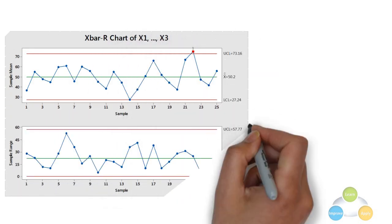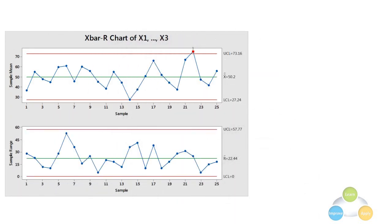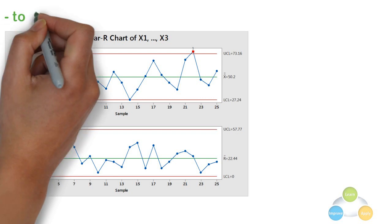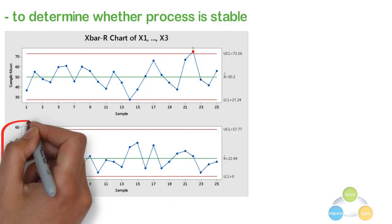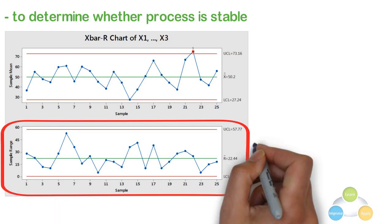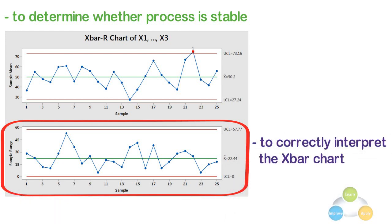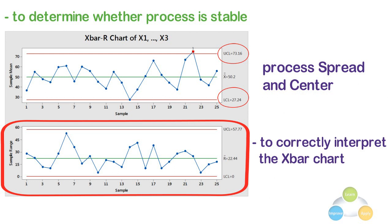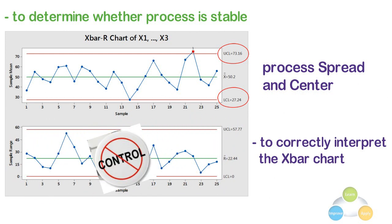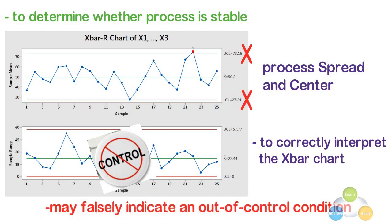The X bar chart and the R chart are displayed together because you should interpret both charts to determine whether your process is stable. Examine the R chart first because the process variation must be in control to correctly interpret the X bar chart. The control limits of the X bar chart are calculated considering both process spread and the center. If the R chart is out of control, then the control limits on the X bar chart may be inaccurate and may falsely indicate an out of control condition or fail to detect one.